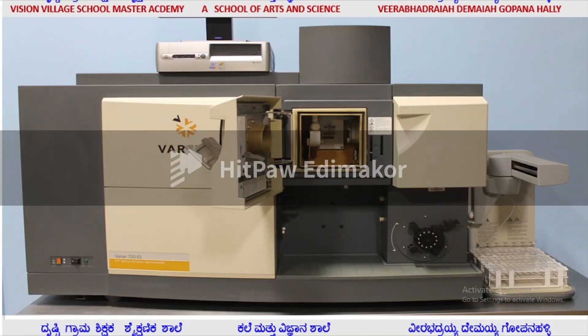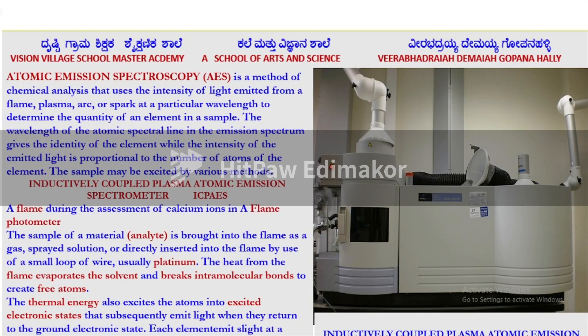The Varian instrument — Atomic Absorption Spectrophotometer — which we use: a solution is prepared and fed into the instrument. Atomic Emission Spectroscopy, AES, is another type of sophisticated instrument which uses emission spectroscopy.